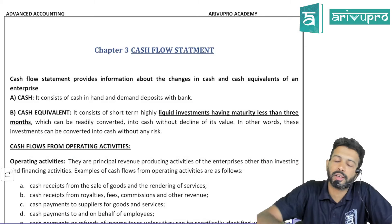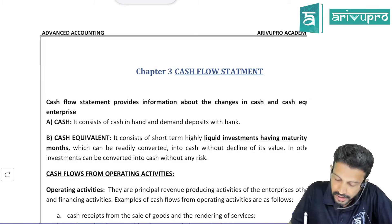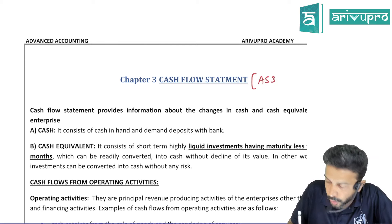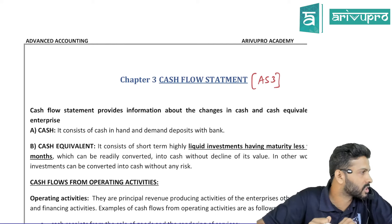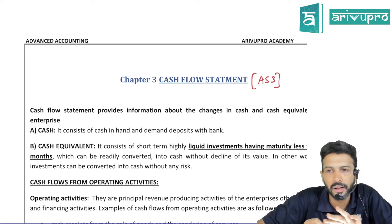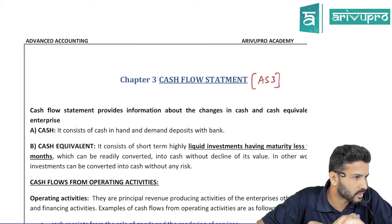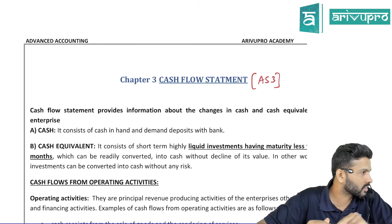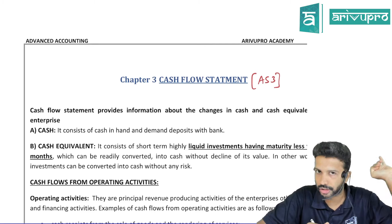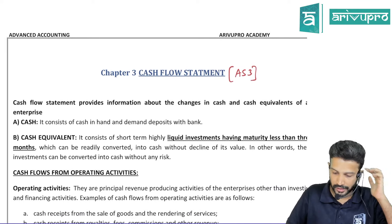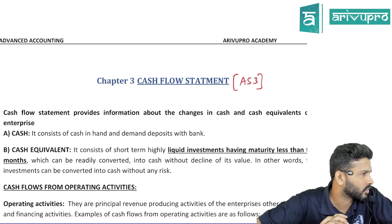Happy evening everyone. Today we'll be starting with the Cash Flow Statement. The treatment of Cash Flow Statement is recommended by accounting standards, so everything we'll be doing in this chapter is dictated by Accounting Standard 3. In the previous session we already saw the importance of accounting standards — basically every standard covers only four things: recognition, measurement, presentation, and disclosure. Now we'll start with Accounting Standard 3.